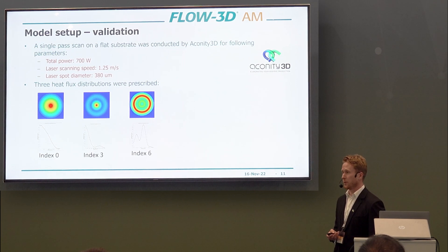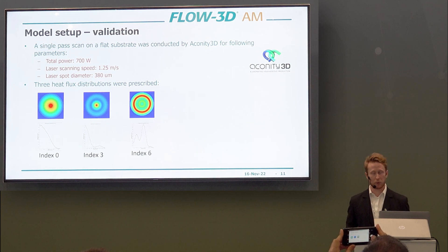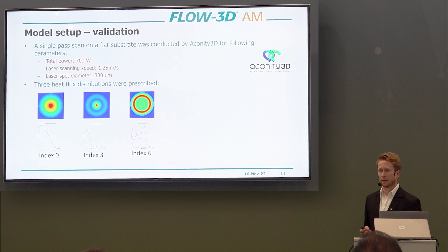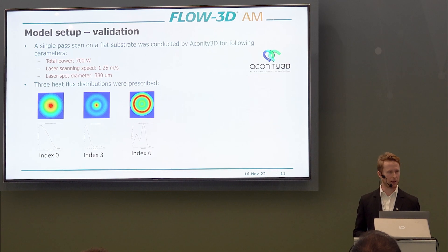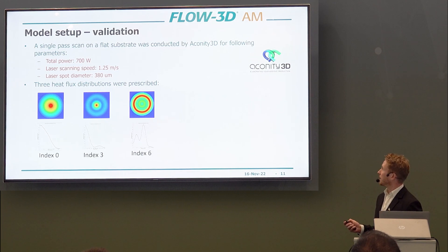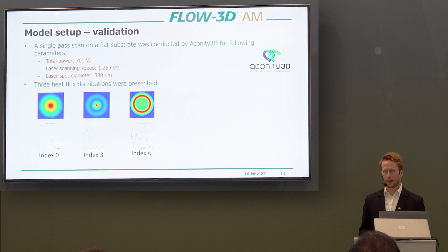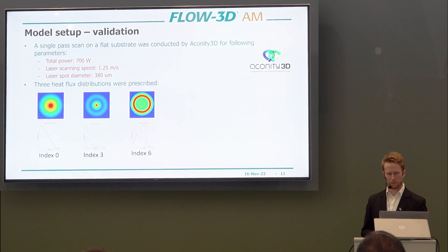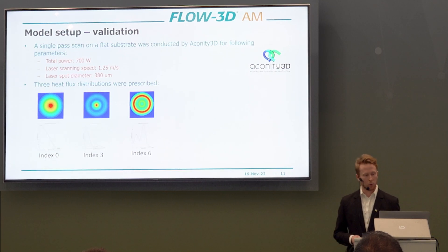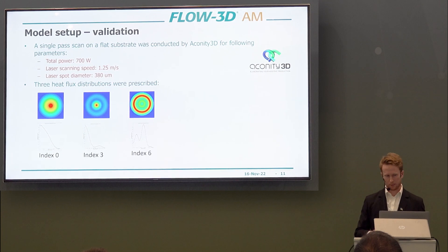As a validation case, we used experiments run by our partner Econity 3D, who used N-light lasers capable of setting different heat flux distributions. Three beam indices were used: index 0, which is close to a Gaussian shape; index 3, which has more energy in the outer ring; and index 6, which has most of the energy concentrated at the outer ring. The total laser power was 700 watts, the scanning speed was 1.25 meters per second, and the laser spot diameter was 380 microns after the optics.